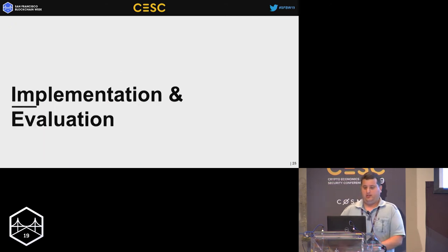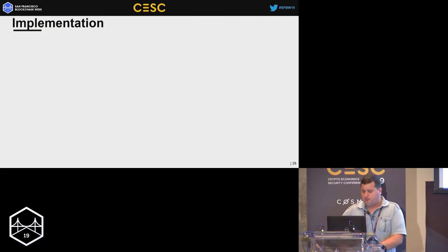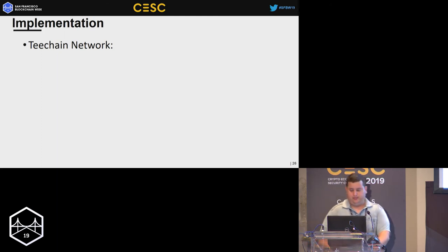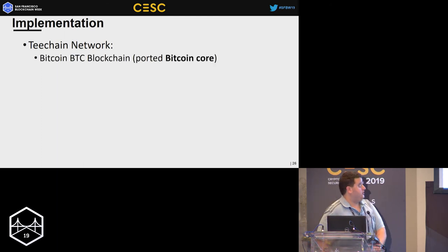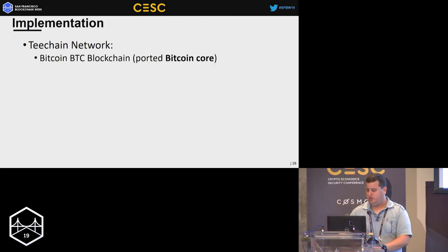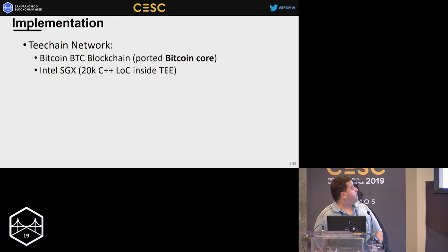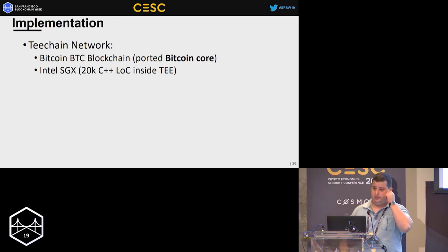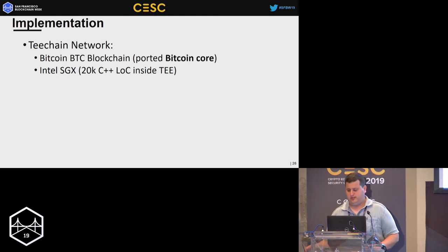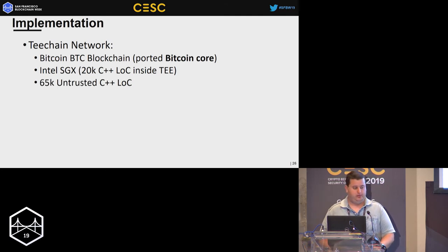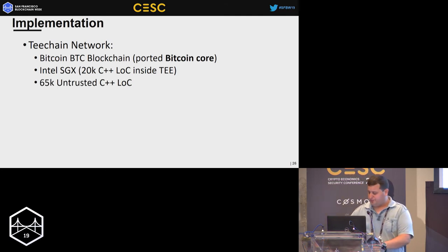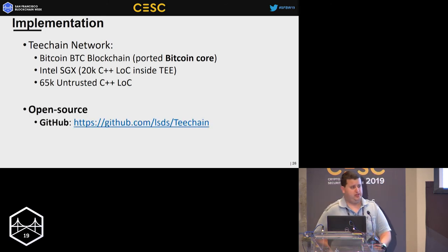Let's talk about implementation and evaluation. We implemented the T-Chain network, ported the BTC core C++ code, and used it to implement T-Chain. The trusted code run inside Intel SGX consisted of around 20,000 lines of C++ code; the untrusted code consisted of around 65,000 lines. We open-sourced the implementation — you can find it on GitHub.